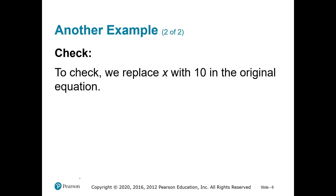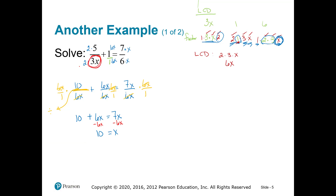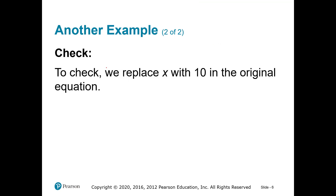We need to check, and here's the reason why we really need to check. Do you notice that this denominator has an x in it? Which means it won't always be a 3. The one thing we have to make sure of is this denominator never equals 0. Our denominators are never allowed to be equal to 0 — that's huge.